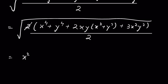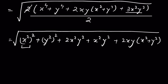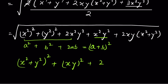We can write x⁴ as (x²)² and y⁴ as (y²)². The term 3x²y² can be split as 2x²y² + x²y². So we have: (x²)² + (y²)² + 2x²y² + x²y² + 2xy(x² + y²), under the square root. If we let a = x² and b = y², then (x²)² + (y²)² + 2x²y² is in the form a² + b² + 2ab, which equals (a + b)², i.e., (x² + y²)².